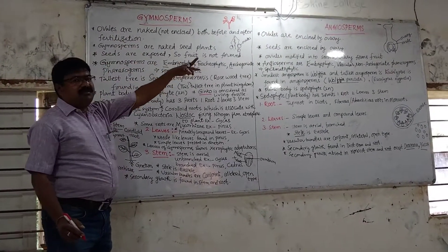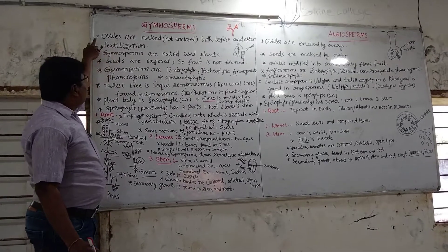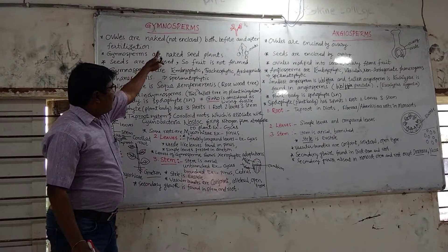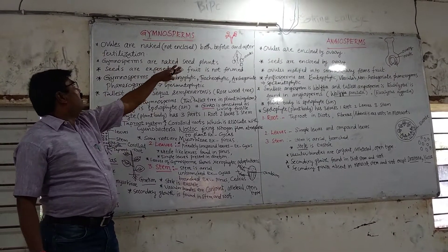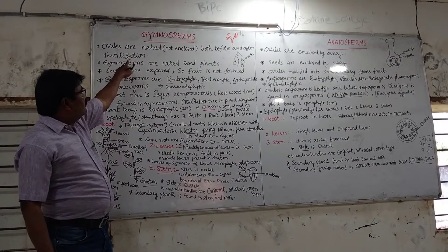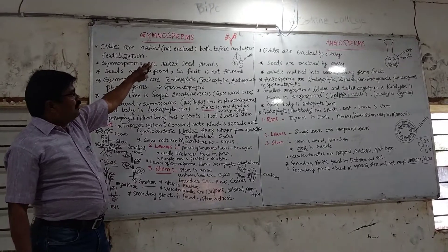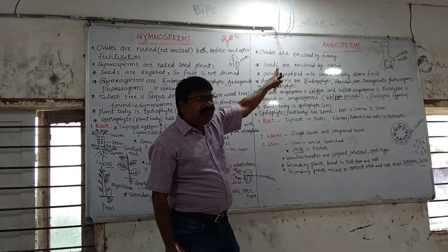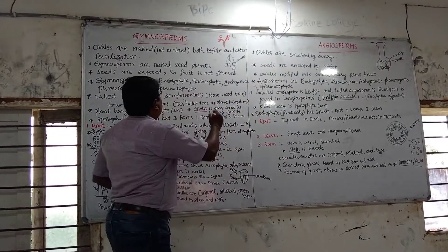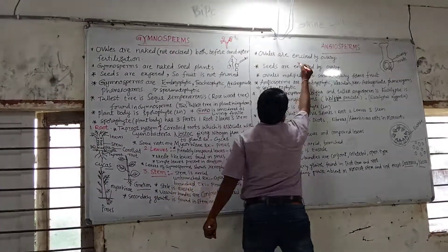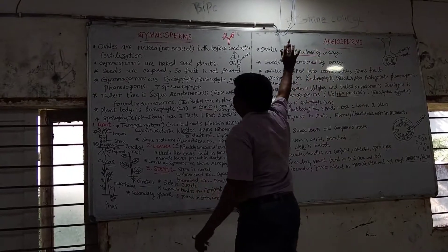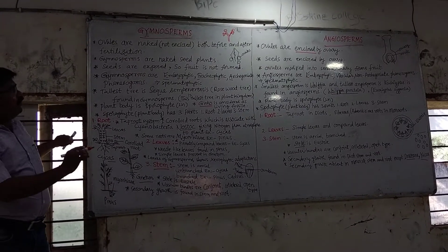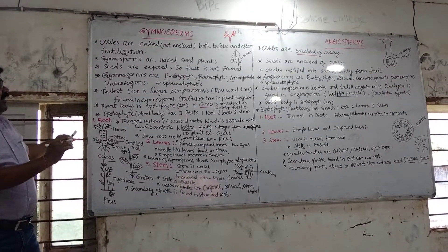Gymnosperms and angiosperms. In gymnosperms, ovules are naked or not enclosed, both before and after fertilization. In angiosperms, ovules are enclosed by ovary. Enclosed means closed — the ovules are closed in angiosperms, whereas in gymnosperms these ovules are naked, not enclosed by any ovary.